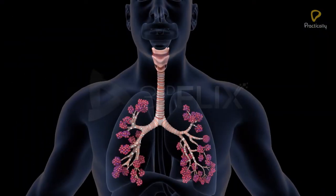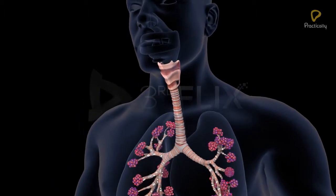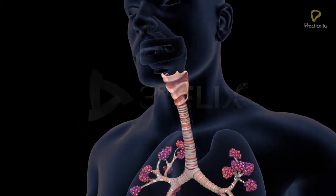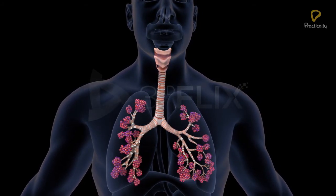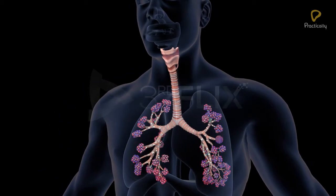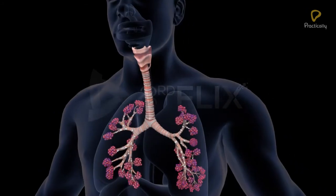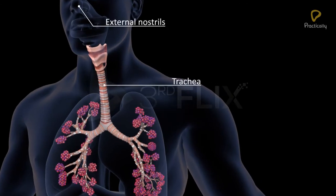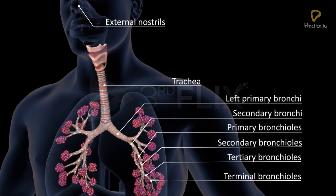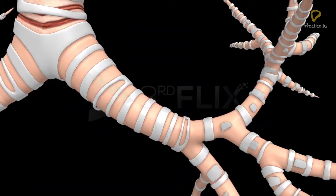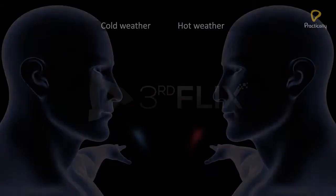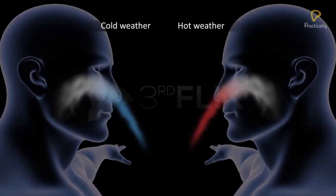The term respiratory tract refers to the passage starting with the external nostrils leading to the alveoli. It consists of two parts: the conducting portion and the respiratory or exchange portion. The path starting with the external nostrils up to the terminal bronchioles constitutes the conducting part. It transports atmospheric air to the alveoli, clears it from dust particles, humidifies it, and brings the inhaled air to body temperature.